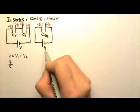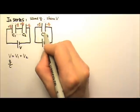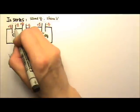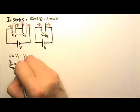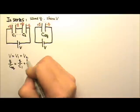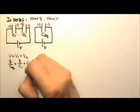And this V1 would equal to the Q1 divided by C1, and Q1 is the same as the Q. And the V2 would be Q divided by C2.